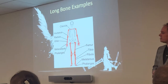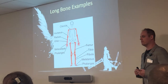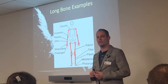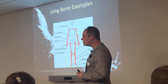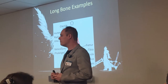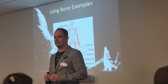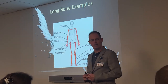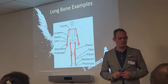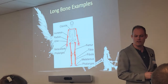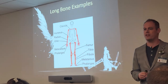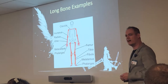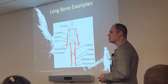They have two epiphyses on the ends, diaphysis in the middle. They have compact bone on the outside with spongy bone on the inside, and then the medullary cavity in the middle helping to create bone marrow. You can't see the periosteum on those models, but imagine that thin sheath wrapping those bones with those attachments and blood vessels.